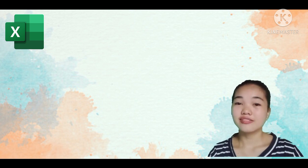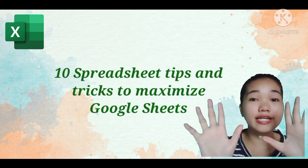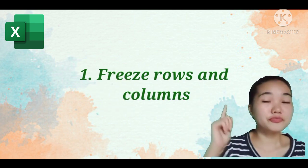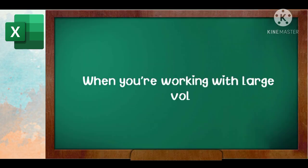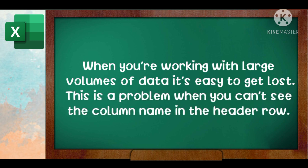Working with Google Sheets can save your company or team a lot of time. Now, here's the ten tips and tricks on using Spreadsheet. Number one, freeze rows and columns. When you're working with large volumes of data, it's easy to get lost. This is a problem when you can't see the column name in the header row.